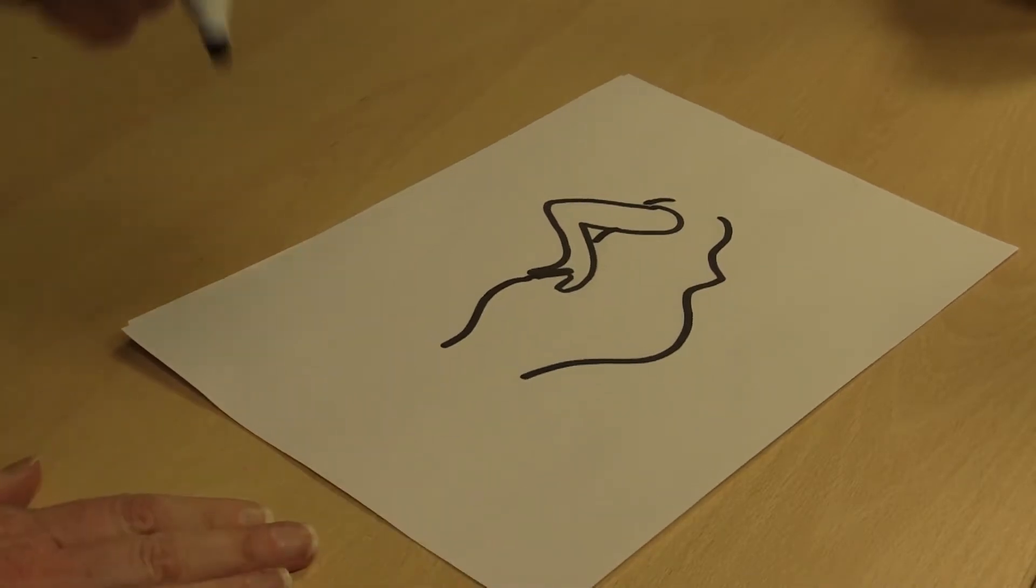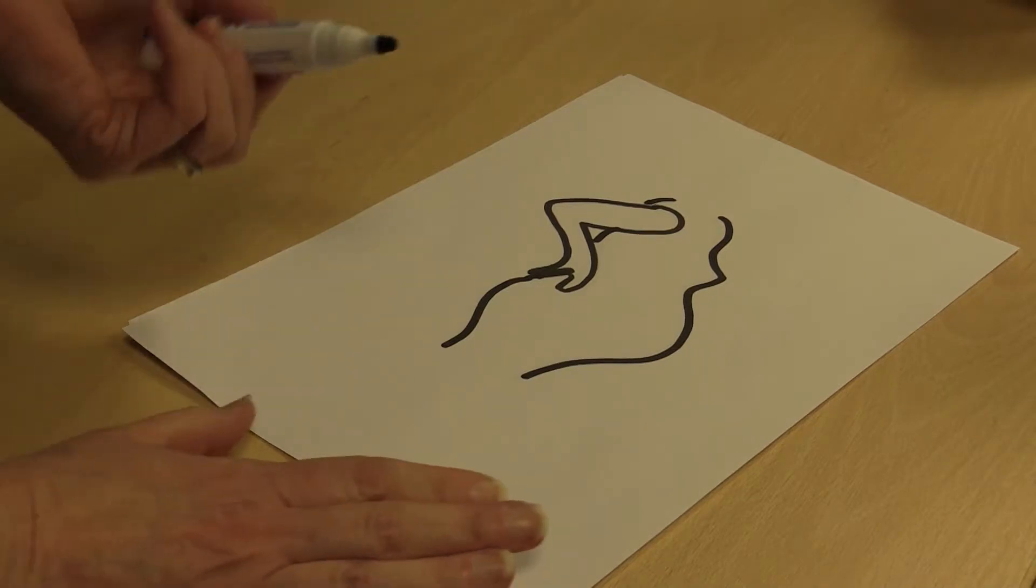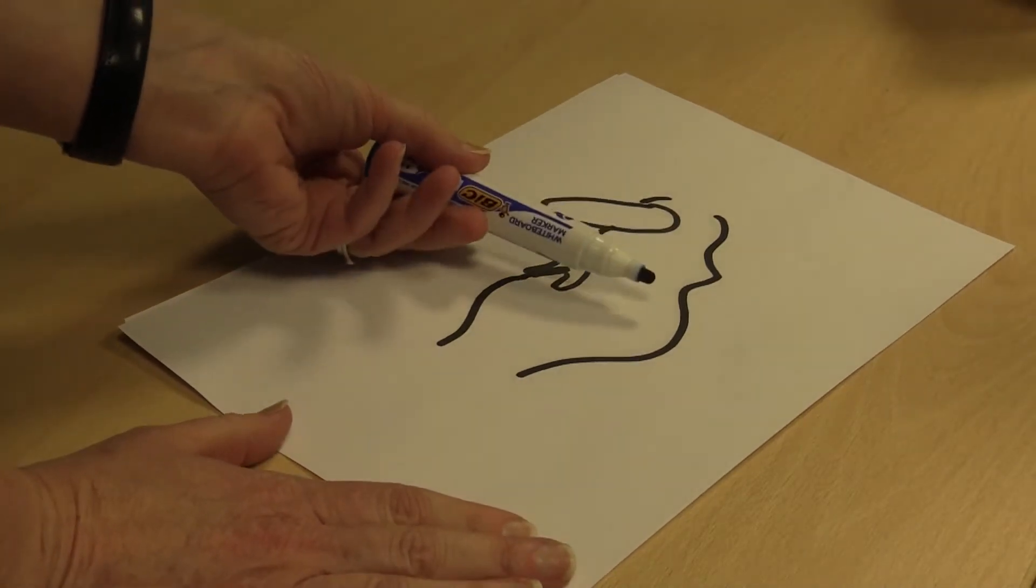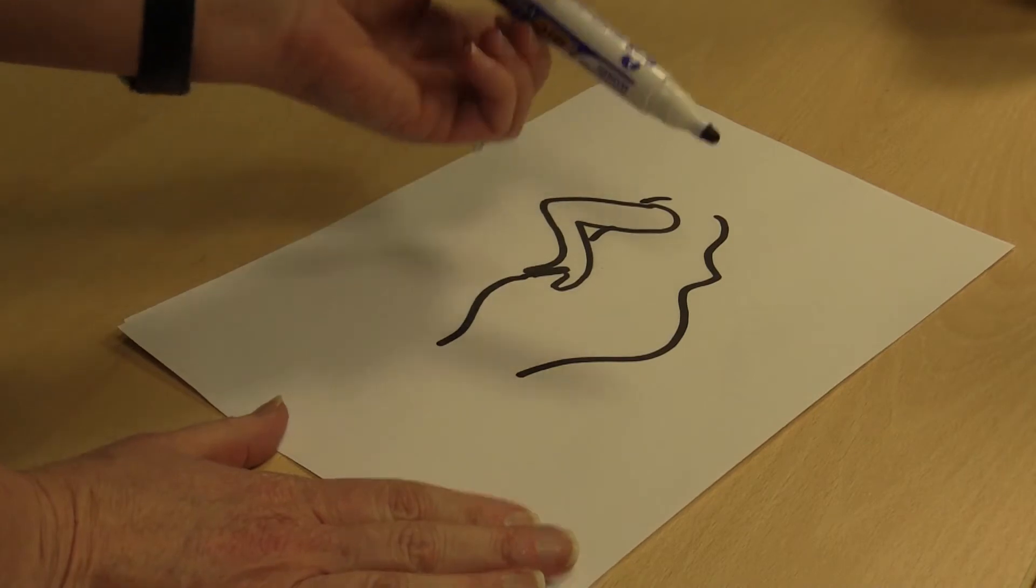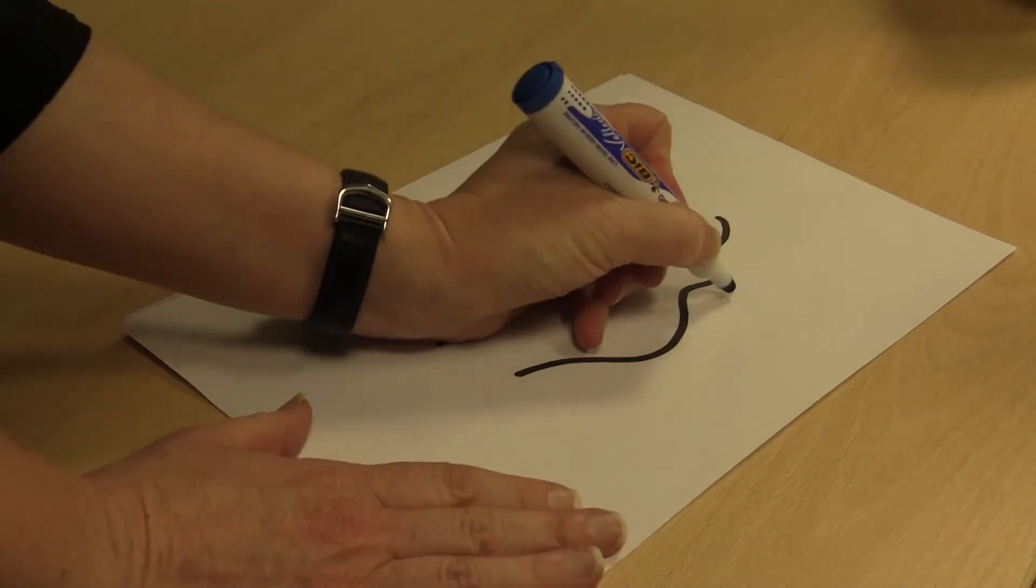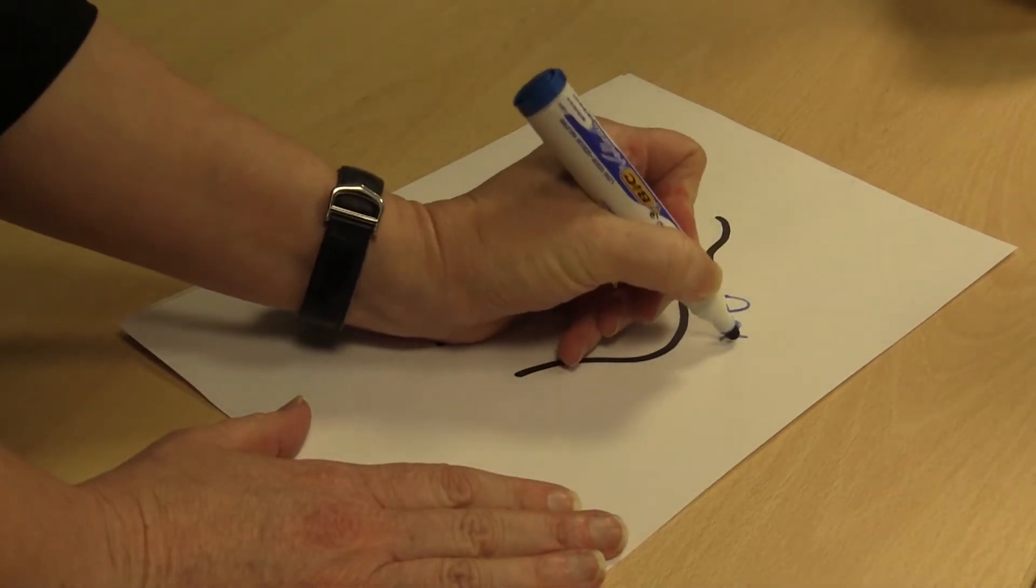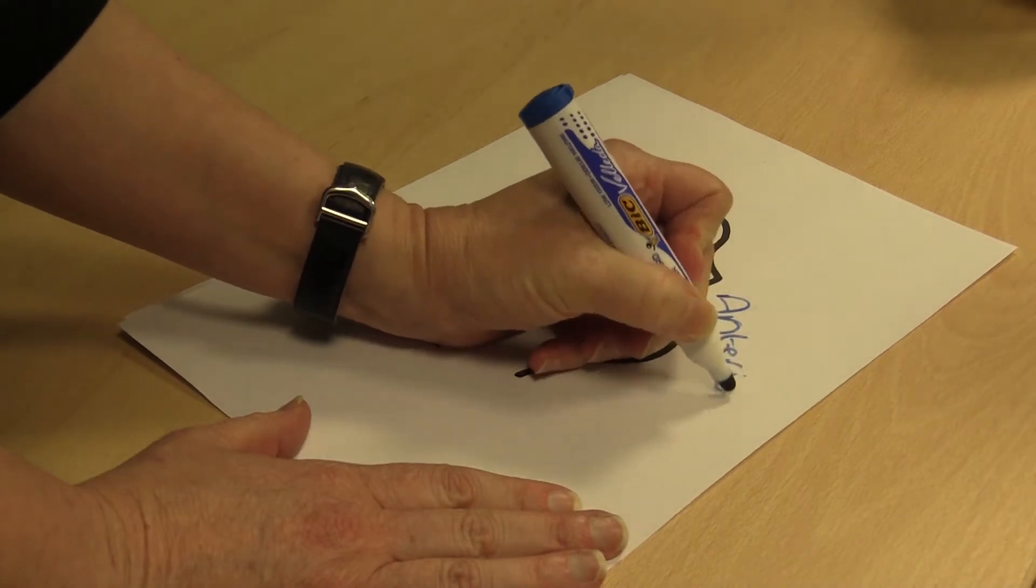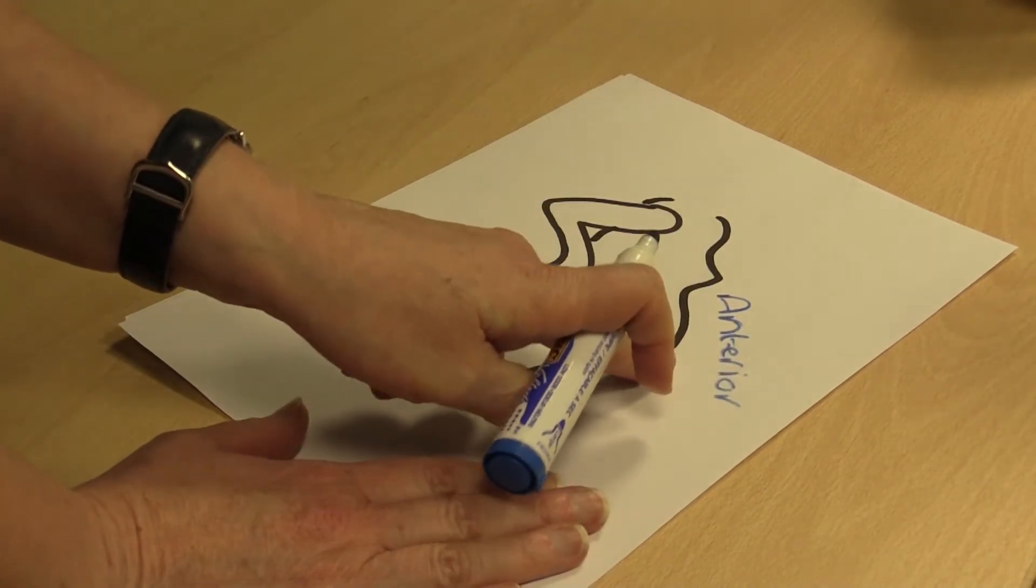I'll just draw on this picture of this pregnant lady where these parts of the body are. The anterior aspect relates to anything that's facing forwards or the front part of the woman's body. This is anterior, that's her anterior aspect.